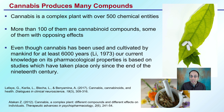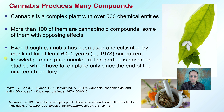Cannabis is a complex plant with over 500 chemical entities, and more than 100 of them are cannabinoid compounds alone, some of which actually have opposing effects. Even though cannabis has been used and cultivated by mankind for at least 6,000 years, our current knowledge of its pharmaceutical properties is based on studies that may have taken place only since the end of the 19th century. So we have a lot more to learn about this plant and how its compounds may best be utilized.